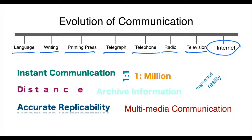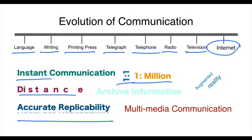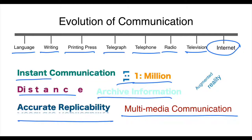Finally we looked at the internet, which is very unique because it combines the attributes of many earlier forms of communication. You can do instant communication across distance; it can be one-to-one or one-to-many. Because communication is digital, it can be replicated millions of times without any loss of accuracy. Communication can also be archived and used across time. The internet allows multimedia communication — text, sound, images, or video — all communicated over the internet.